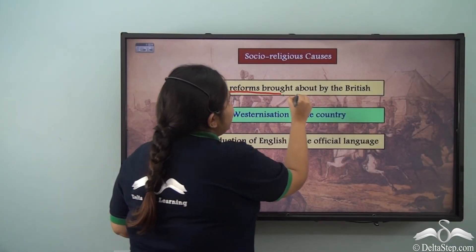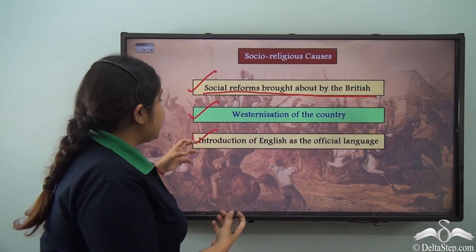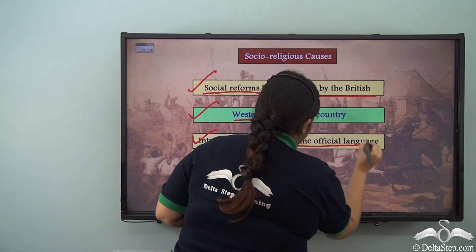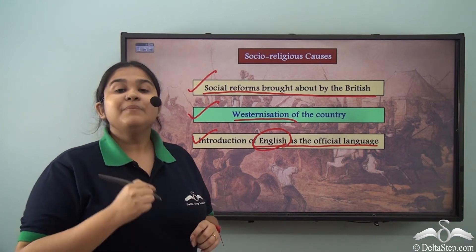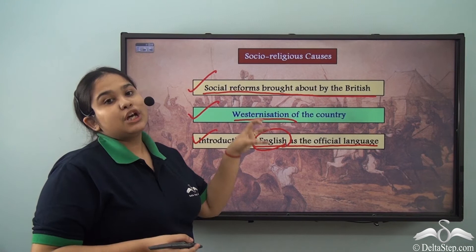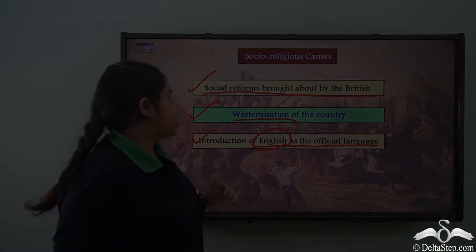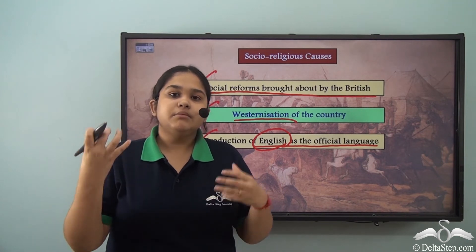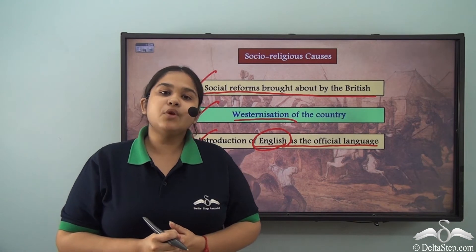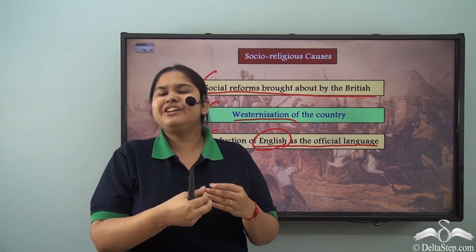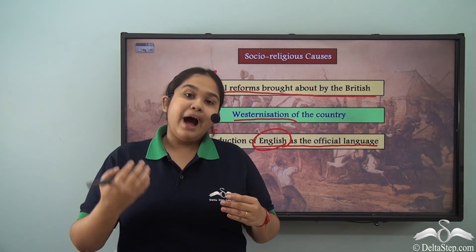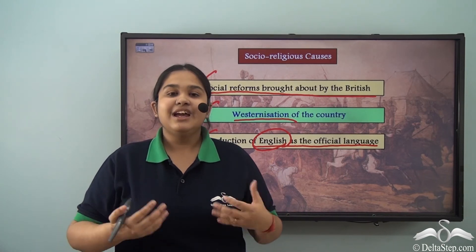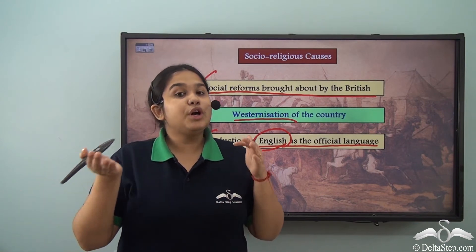These socio-religious causes were a primary reason why the Indians were angered and felt the British were crossing the line. First, the British changed certain practices by bringing out laws against them. Second was Westernization and the introduction of English education. Third was the introduction of English as the official language. It was not only the socio-economic causes but also the fact that the British, being foreigners, did not understand the colony they were colonizing — including the military advancements they were trying to bring in.